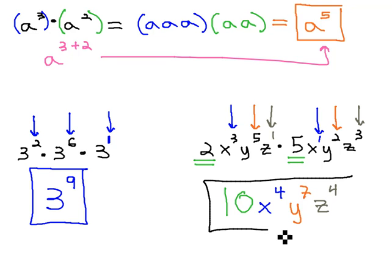And so when we multiply 2x cubed y to the fifth z to the first by 5x to the first y squared z cubed, we end up with 10 x to the fourth y to the seventh z to the fourth.